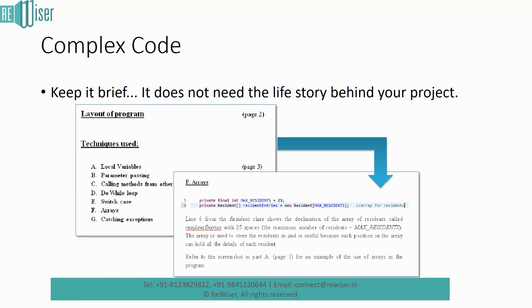You have the techniques used - for example, local variables, parameter passing. These are various techniques you've used in your code. For arrays, for example, pick out statements from your code, take screenshots of that, and paste it under the array concept. Then you mention why that was necessary for the product. This explanation is actually very important. Please do not ignore the explanation.